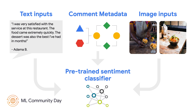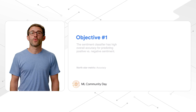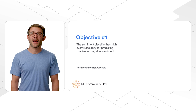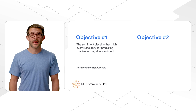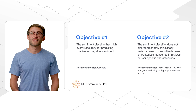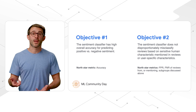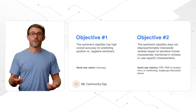The inputs to the sentiment classifier are the text body of the review, the review metadata, and any associated images. We have two main objectives. First, we want to ensure that our sentiment classifier has high overall accuracy for predicting sentiment. Second, we want to make sure that the classifier does not disproportionately misclassify reviews based on sensitive identity characteristics that may be mentioned in the reviews — for example, like language, gender, or race.